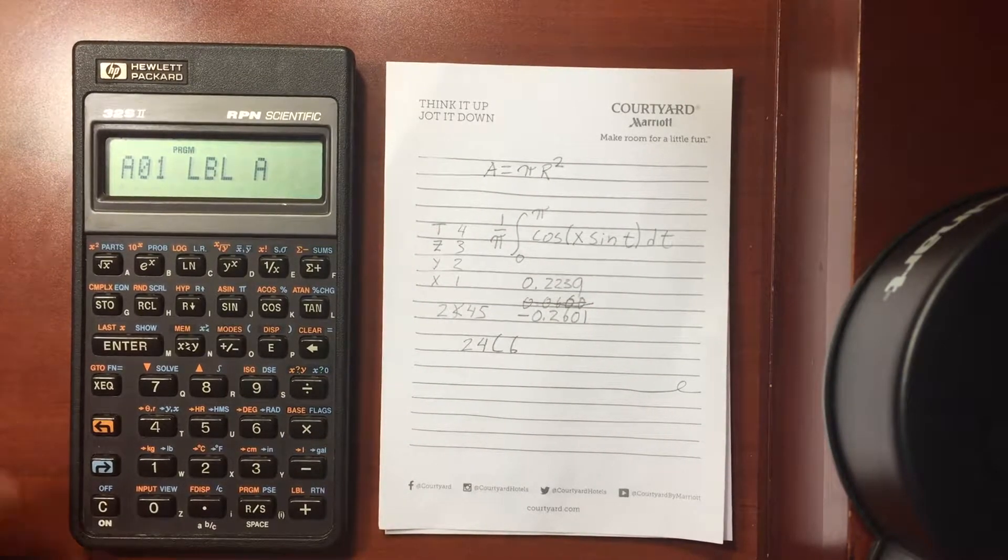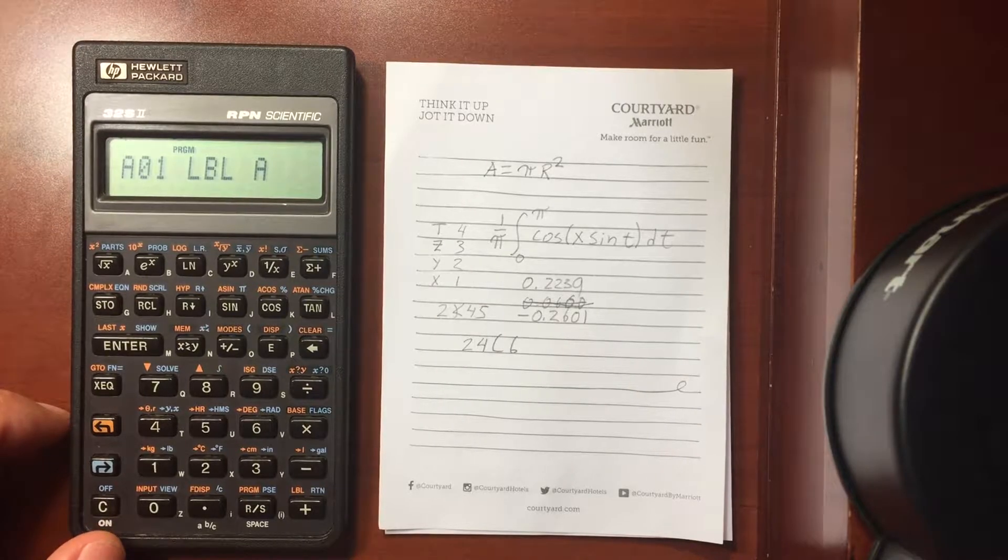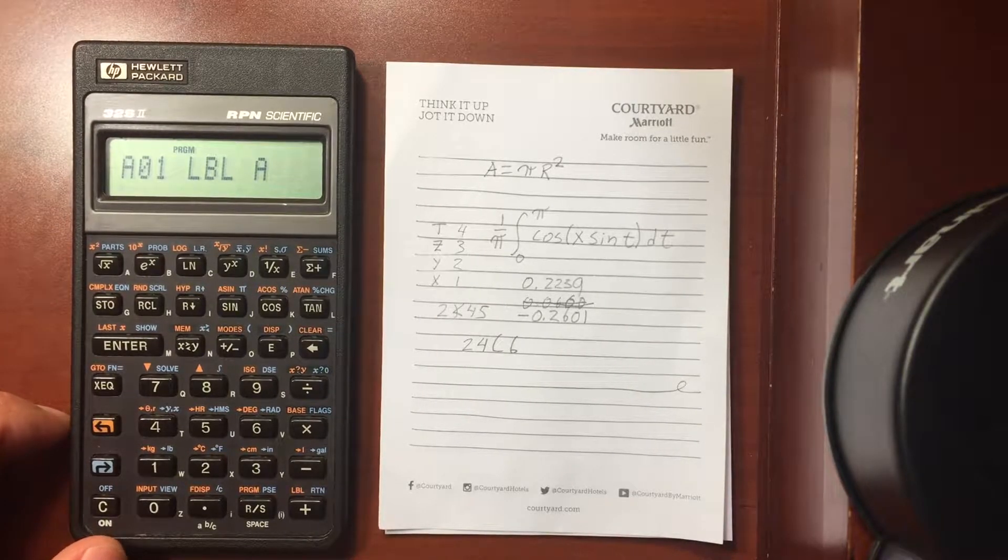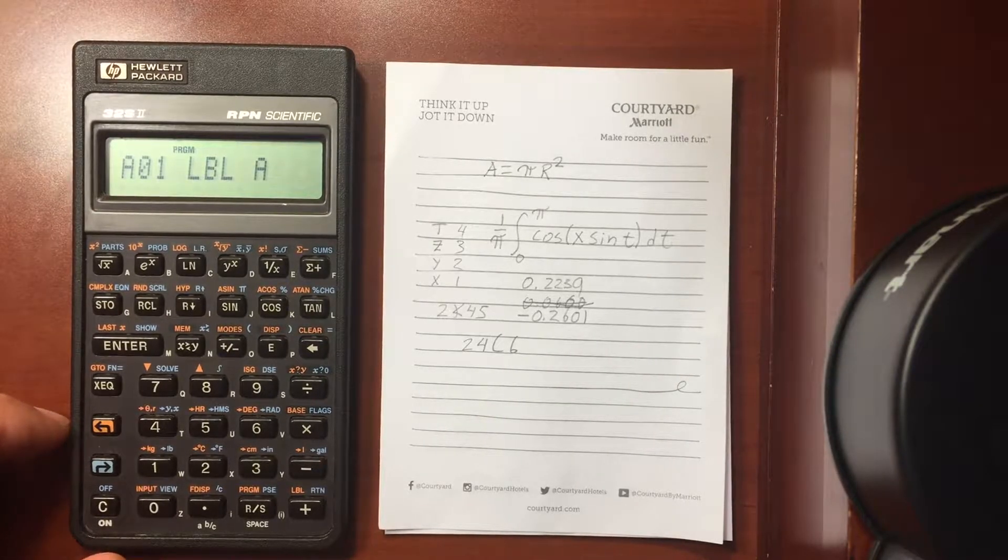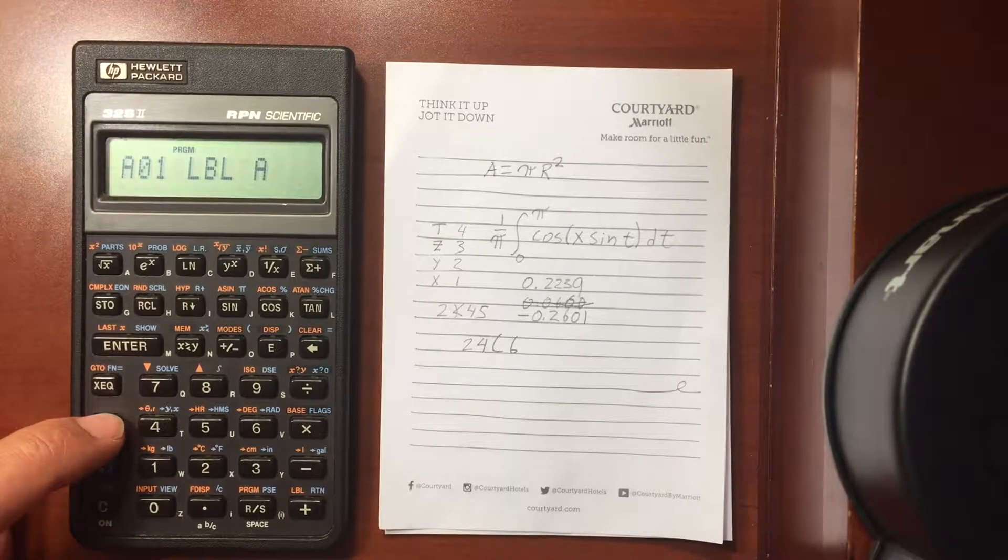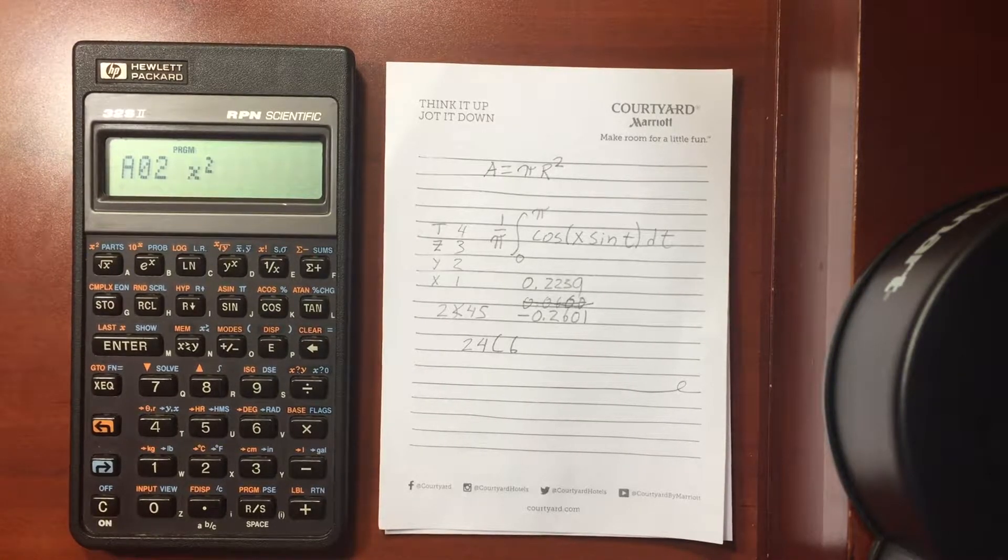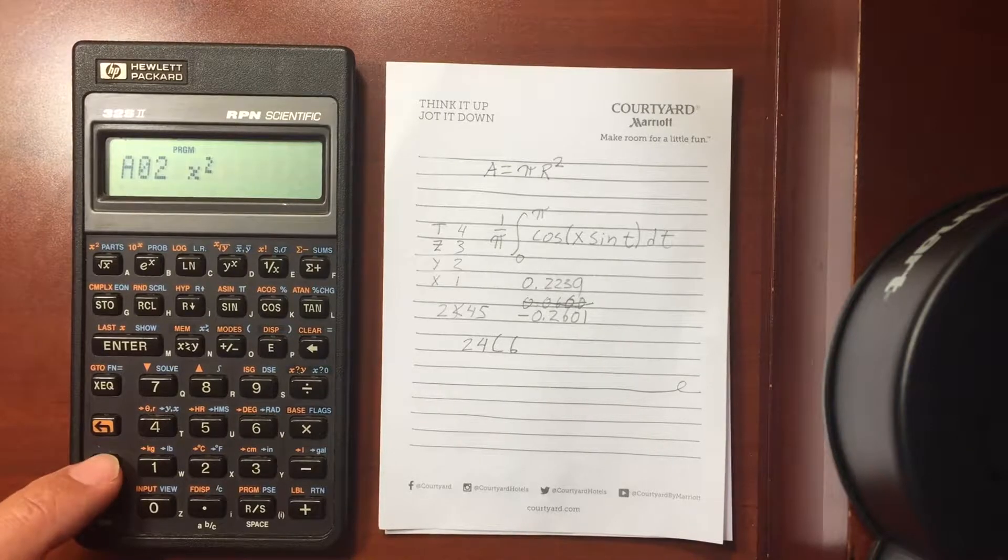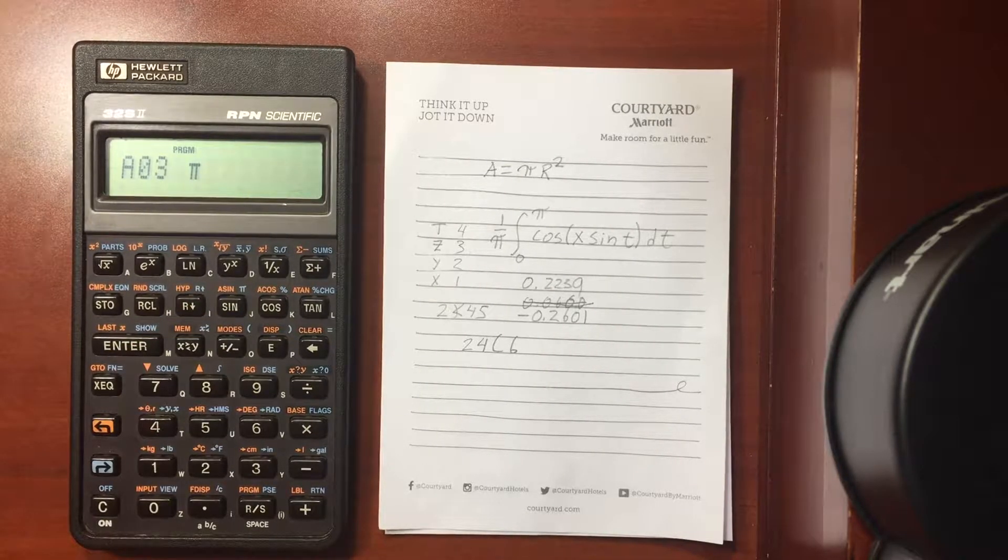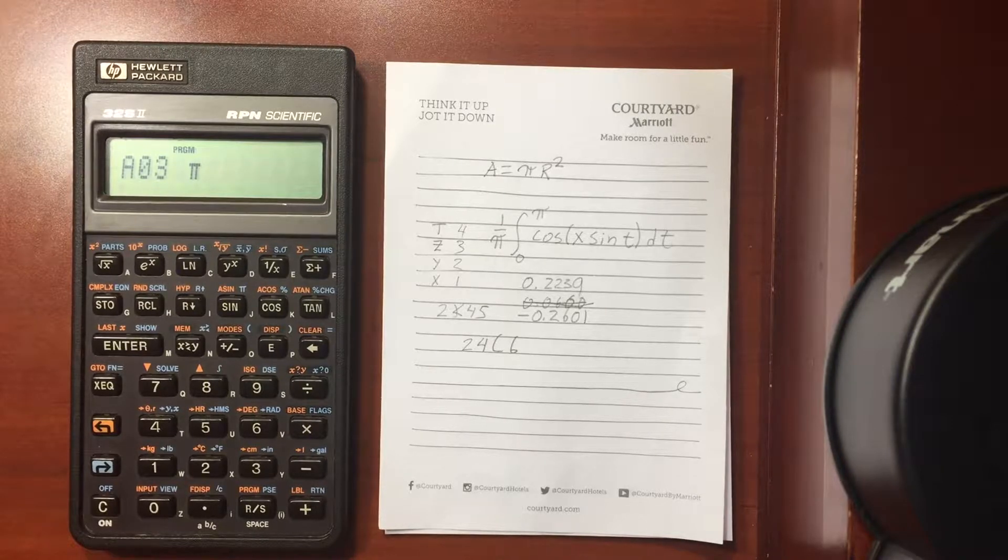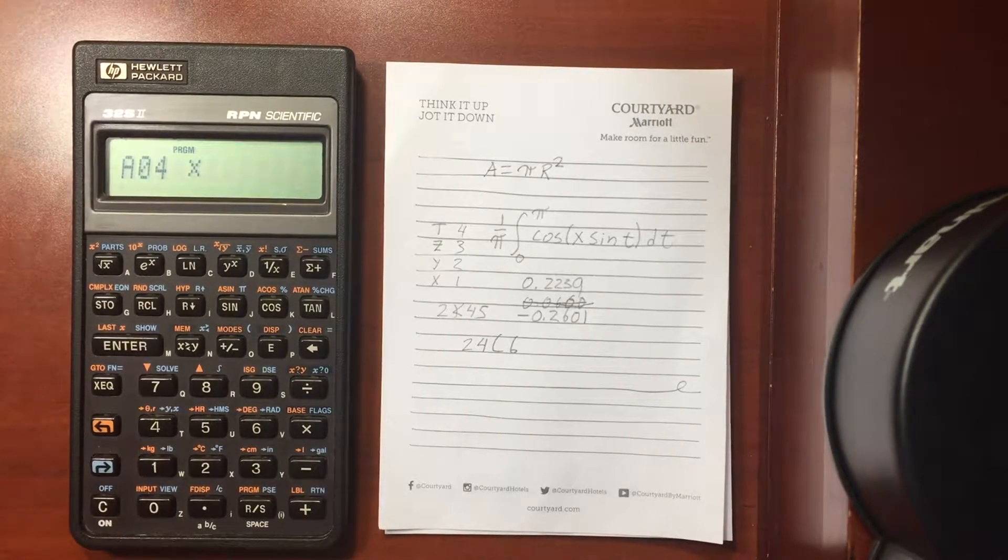I've already got a value in the X register when I execute this program, so I'm going to square it. Then I'm going to put pi into the register. The programming is all done with RPN, reverse Polish notation, and then I'm going to multiply those two values together.